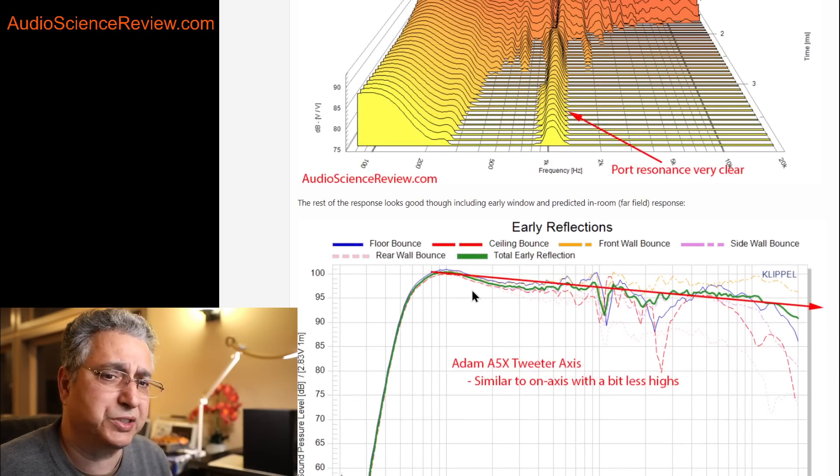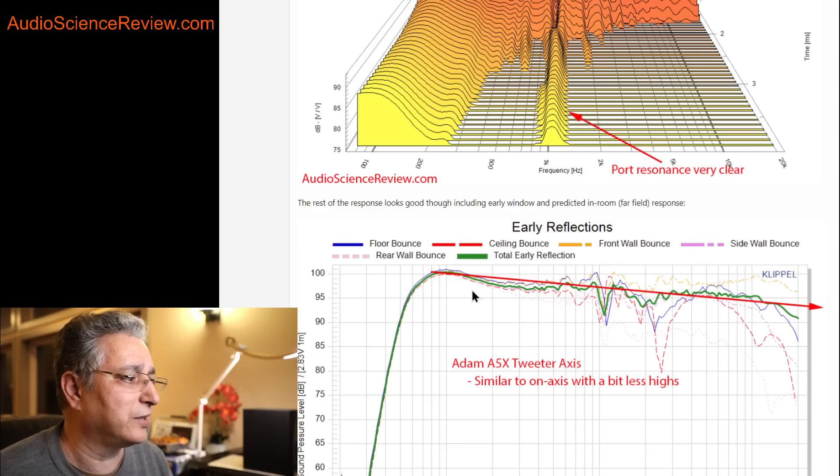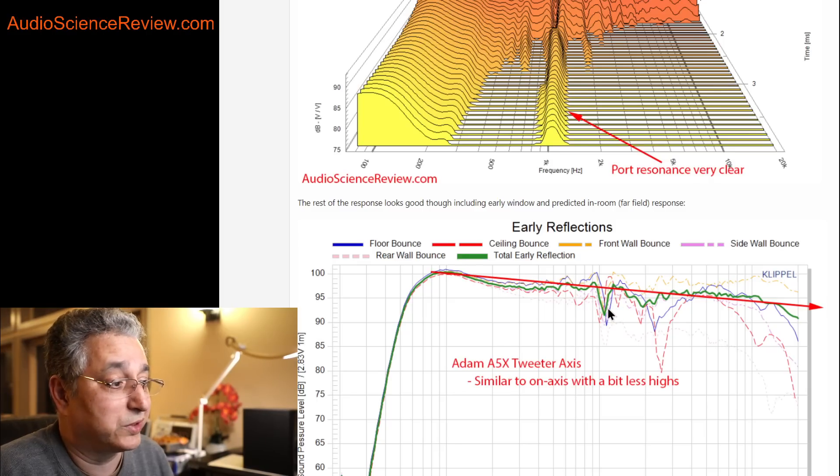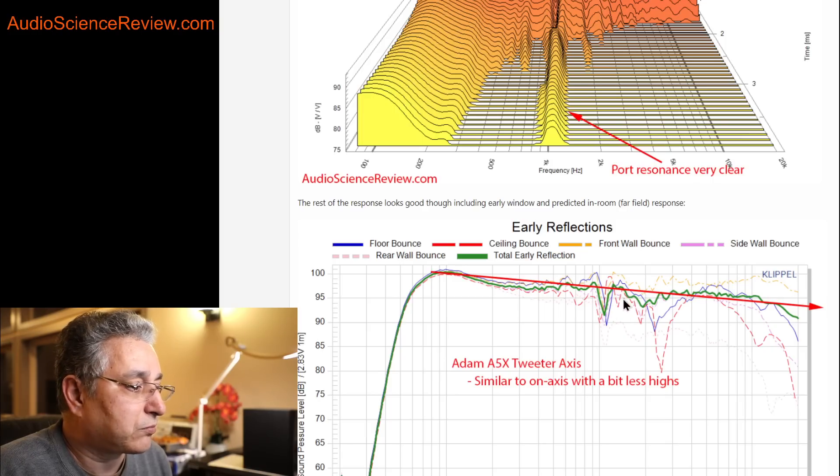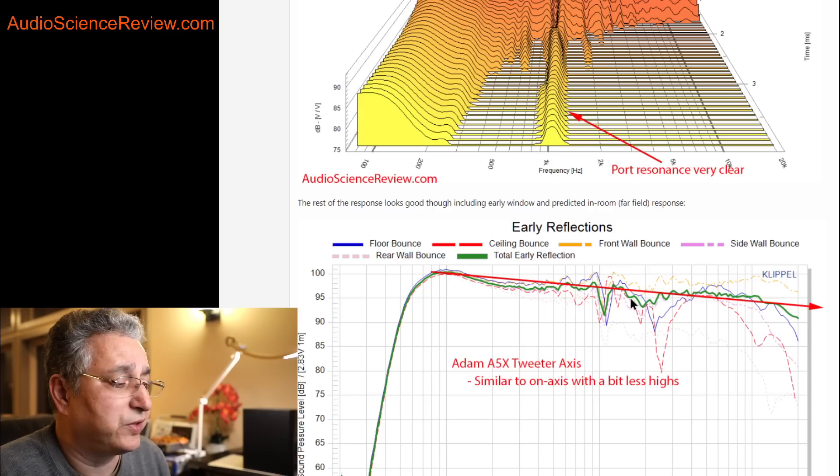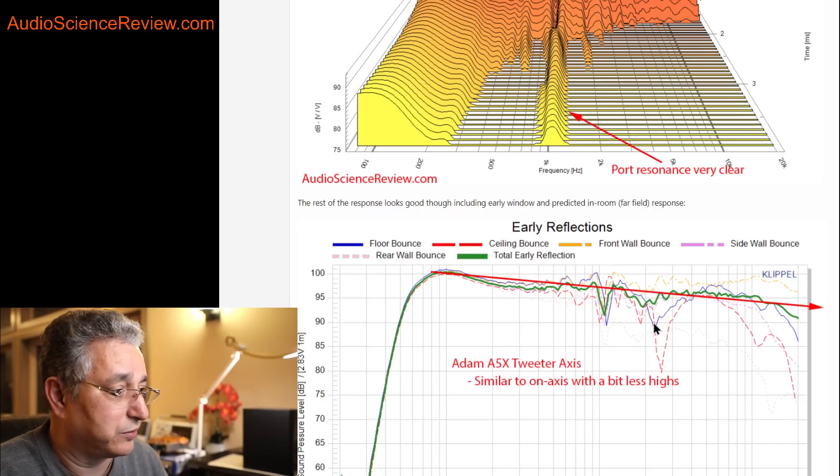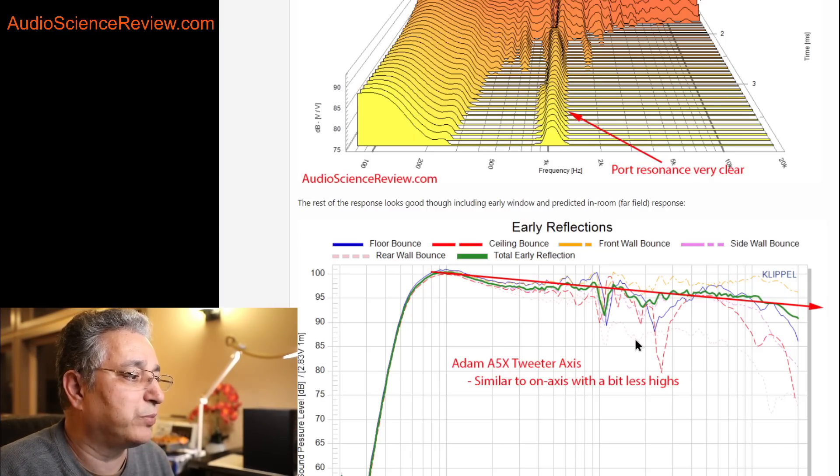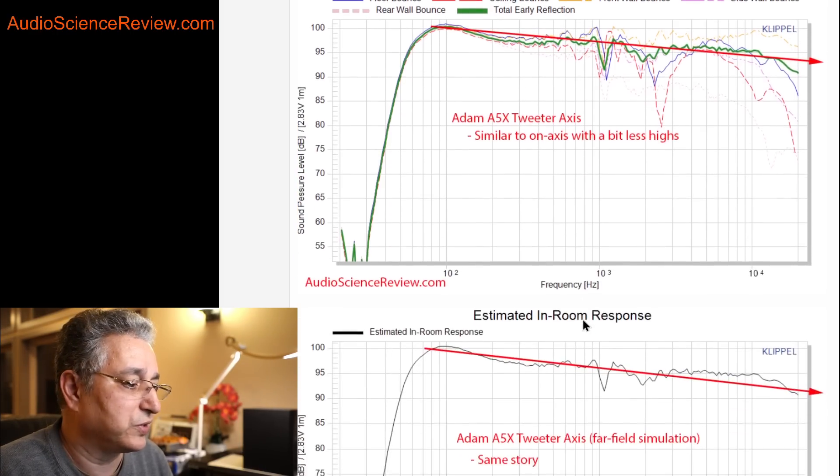Early reflections, which is the floor and ceiling and back wall, they're very similar to the on axis, for good or bad. For good that we want it to be similar, which means that reflections won't sound different than the direct sound. Bad is that we have the V in here and we have a little bit of directivity error in here, but there's a little bit of a dip in here. So in general, if you can avoid floor bounce or if you have it on a desk, desk bounce, it does you some good. But really, it's not a major cause of concern.